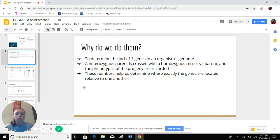The purpose is to determine the loci of three genes in an organism's genome. The principle is that a heterozygous parent is crossed with a homozygous recessive parent and the phenotypes of the progeny are recorded. These numbers help us determine where exactly the genes are located relative to one another. So we can make a gene map based on these numbers of progeny that we find when we cross these two.